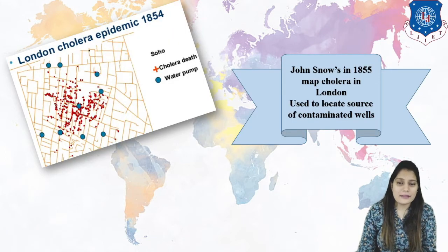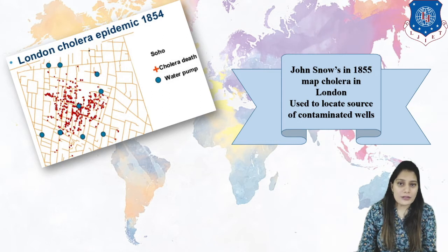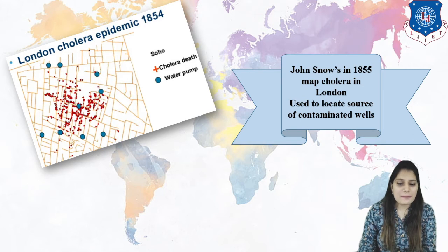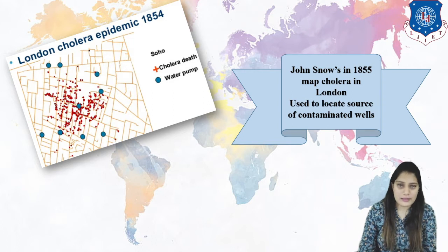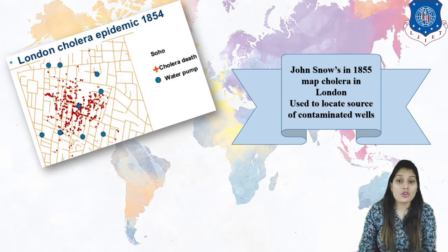You can see here that I have shown one map. There are dots, locations, and lines. Basically, this is the map of cholera in London — it occurred in 1855. John Snow was the first person who invented and thought of these geographical location-based service analysis.